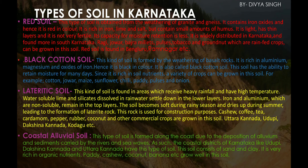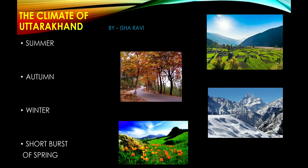Climate of Uttarakhand: There are four main climatic seasons in Uttarakhand — summer, autumn, winter, and a short burst of spring. The spring season lasts only about one month, making it a very brief period in the state's climate cycle.